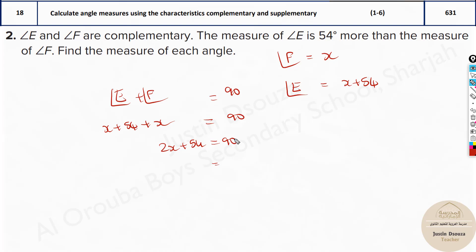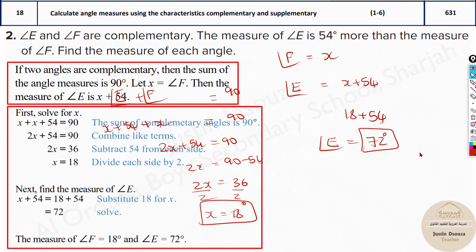Here we will have 2x plus 54 equals 90. Take this to the other side: 2x equals 90 minus 54. At the right side, we will solve 90 minus 54, that is 36. Divide both sides by 2. You will have x equals 18. You can use the calculator for this. Once you have found x as 18, that is angle F. What is angle E? So it is 18 plus 54. Angle E will be equal to 72. That's the answer: 72 degrees and 18 degrees.